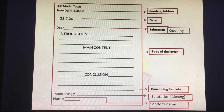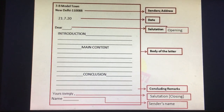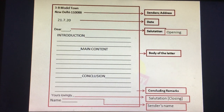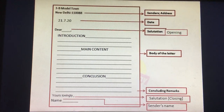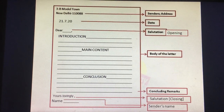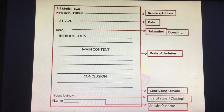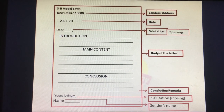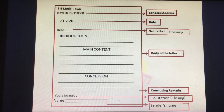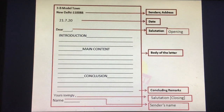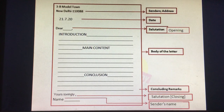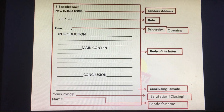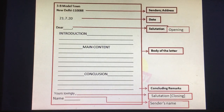Then again leave one line and write the closing salutation: 'Yours lovingly,' with a comma. In the next line write the sender's name. This is the last portion. In this way you write an informal letter. Remember that you are going to write the letter in left alignment — throughout the letter, all paragraphs and content should follow the left side.